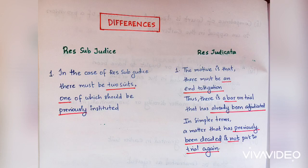In the case of res judicata, the motive is that there must be an end to litigation. Thus there is a bar on the trial of a matter that has already been adjudicated. In simpler terms, a matter that has previously been decided is not put to trial again.